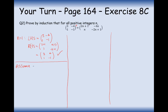Now assume our theorem is true for n=k. So we assume that (3, −4; 1, −1)^k = (2k+1, −4k; k, −2k+1).